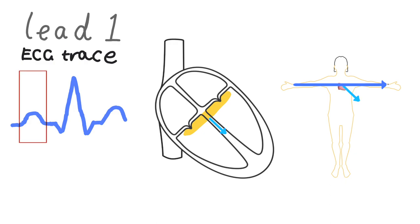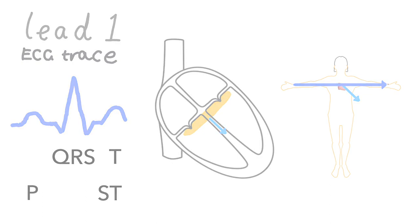We call this part of the ECG trace the P wave, then the QRS complex, the ST segment, and the T wave. And that's how the trace is produced for lead one of our ECG. Most ECG machines have 12 leads and the principles are exactly the same for each of these other leads.